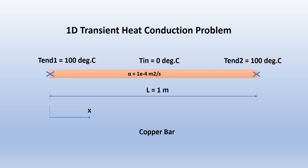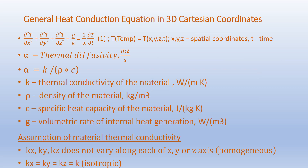Let's go back to the general heat conduction equation in 3D Cartesian coordinates: ∂²T/∂x² + ∂²T/∂y² + ∂²T/∂z² + g/k = (1/α)(∂T/∂t). Here the uppercase T represents the temperature, which is a function of x, y, z, and time t. Alpha is the thermal diffusivity given in meter squared per second, where alpha equals k over rho times c. Here k is the thermal conductivity in watts per meter Kelvin, rho is the density in kilograms per meter cube, c is the specific heat capacity in joules per kilogram Kelvin, and g is the volumetric rate of internal heat generation in watts per meter cube.